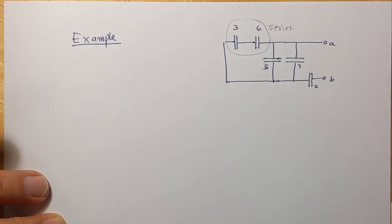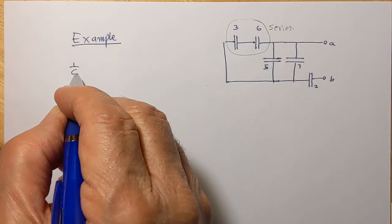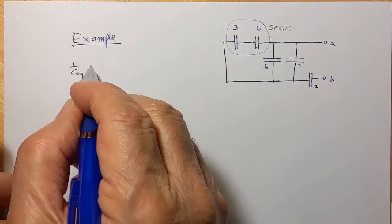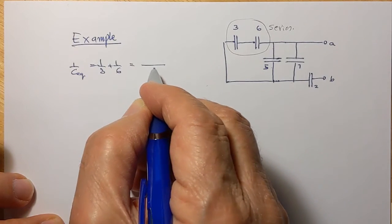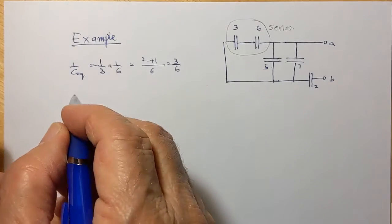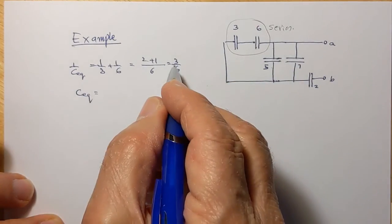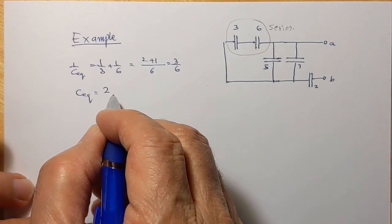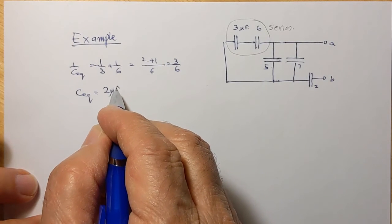But let's first add these two. So we add these two and we say that 1 over C equivalent of these two is 1 over 3 plus 1 over 6, which would become 2 plus 1, which is 3 over 6. And therefore C equivalent of these two capacitors only is 6 over 2, which is 2 units. Now all of these are microfarads, so that would be 2 microfarads.